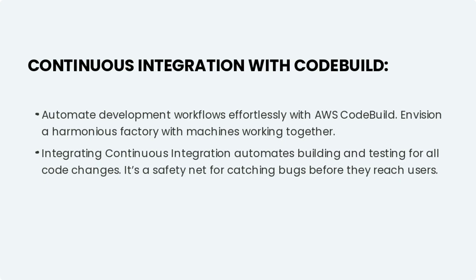Automate development workflows effortlessly with AWS CodeBuild. Integrating continuous integration automates building and testing for all code changes — it's a safety net for catching bugs before they reach users. CodeBuild scales automatically, processing multiple builds concurrently.